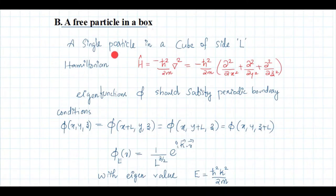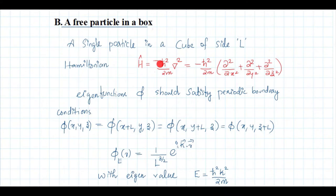It is a single particle in a cubical box of side length L. The Hamiltonian is H = -ℏ²/(2m) ∇². Since it is a free particle with only kinetic energy, p²/2m, and the operator corresponding to p is -iℏ∇, this becomes -ℏ²/(2m)∇², where ∇² = ∂²/∂x² + ∂²/∂y² + ∂²/∂z².